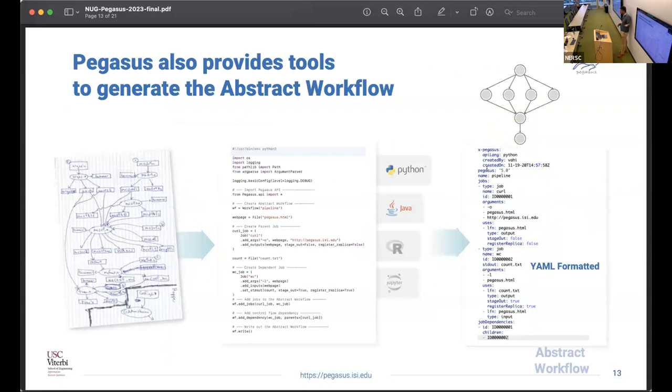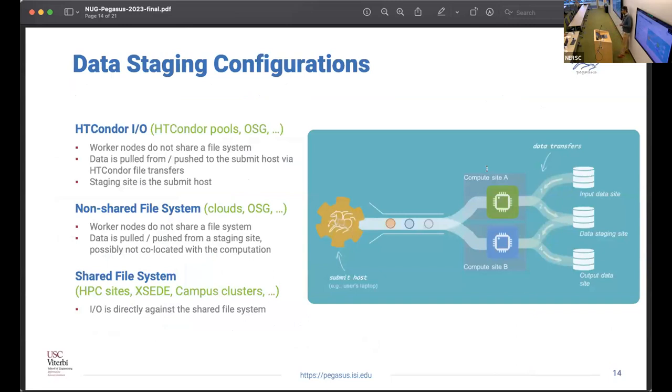To generate these abstract workflows, Pegasus has workflow generation APIs in Python, Java, and R. Most of our users use our Python API. We released a brand new Python 3 based API, a small snippet of the API. It's a very intuitive, easy to use API that generates abstract workflows. All the catalog formats and the workflow formats internally in Pegasus are YAML formatted, but you just use the API to generate the workflow description.